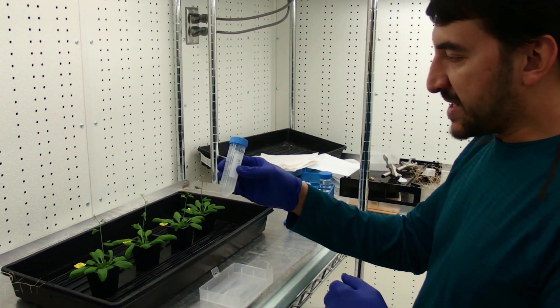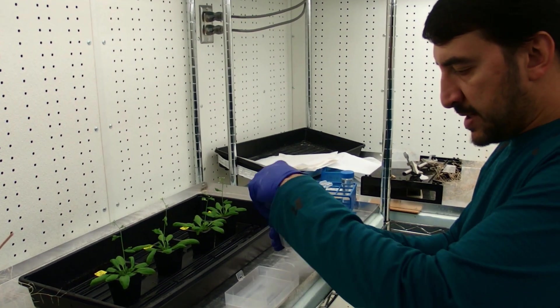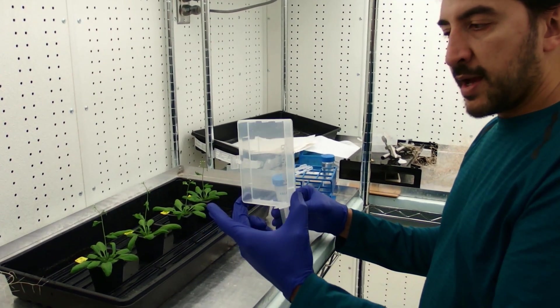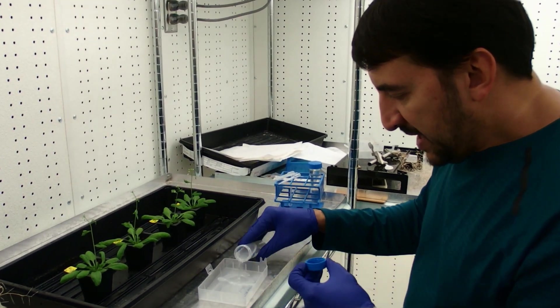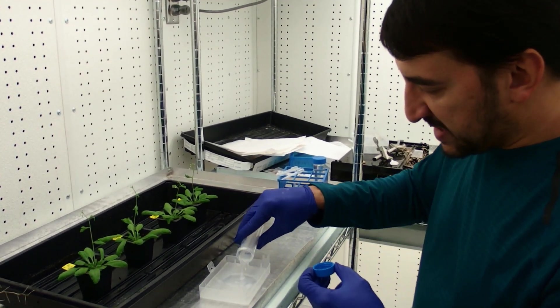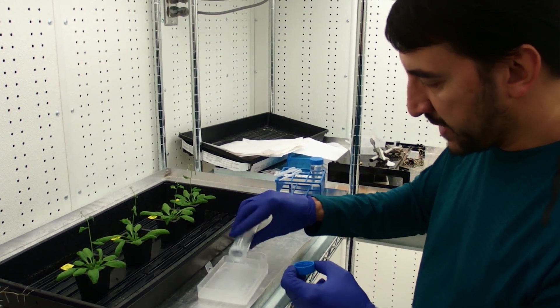We're going to take our Agrobacterium sucrose solution. We can put it into a petri dish lid. You can put it into whatever you want. A small dish is what we're going for here.